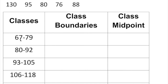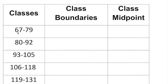This is the first class. The lower class limits are 67, 80, 93, 106, and 119. The upper class limits are 79, 92, 105, 118, and 131. Any number that is larger in a class is called the upper class limit, and any number that is smaller is called the lower class limit.